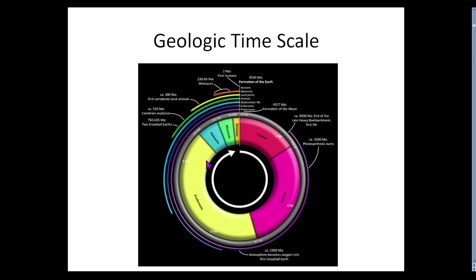Geologic time — this is just a clock model. You can divide it into 12 hours or 24; doesn't really matter. The point is that time is very long. Humans don't even get a tick mark on here because they've been around for roughly two million years.